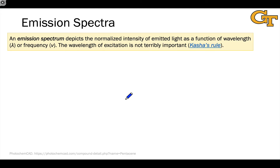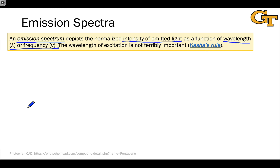An emission spectrum is the other side of the coin from absorbance. We still use a light beam to excite the sample, but now we measure the intensity of emitted light rather than how much light is absorbed, as a function of the wavelength or frequency of light emitted. The wavelength of light impinging on the sample doesn't matter too much because of Kasha's rule — we can excite to a higher vibrational level or even a higher electronic state, and rapid internal conversion and vibrational relaxation will return us back to S1 very quickly.